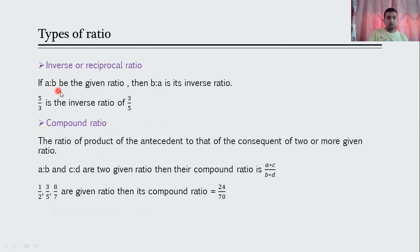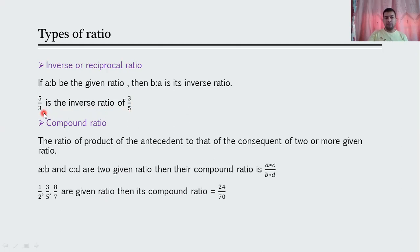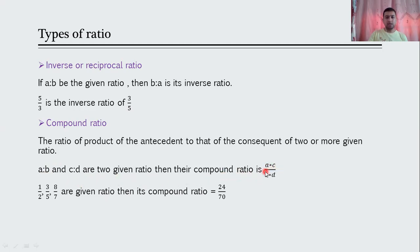Inverse or reciprocal ratio: if a to b is the given ratio, then b to a is its inverse ratio. For example, 5 upon 3 is the inverse ratio of 3 upon 5. Compound ratio is the ratio of the product of antecedents to the product of consequents of two or more given ratios. If a upon b and c upon d are given, the compound ratio is a×c upon b×d.